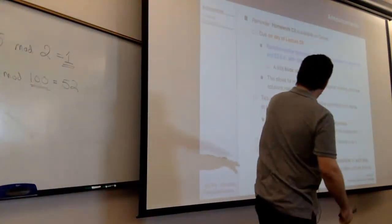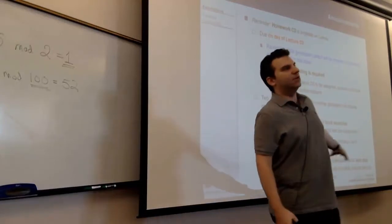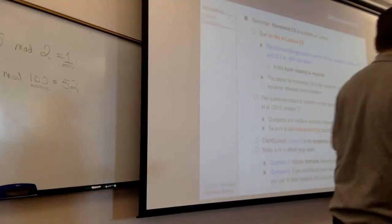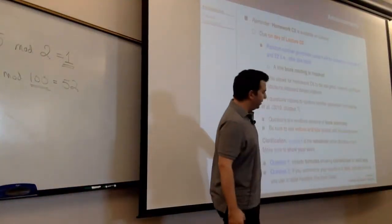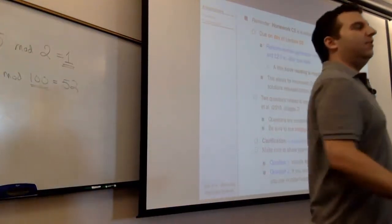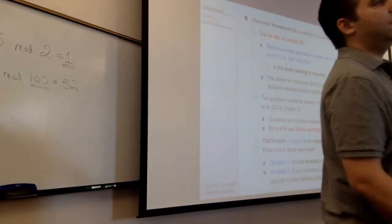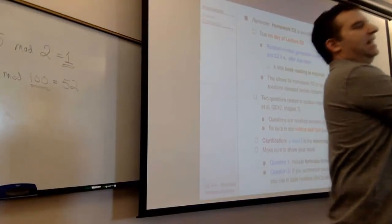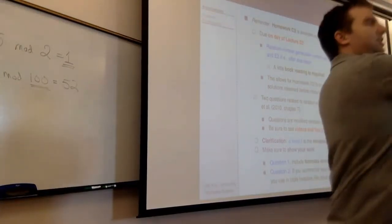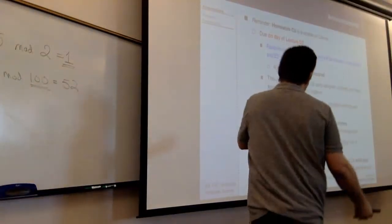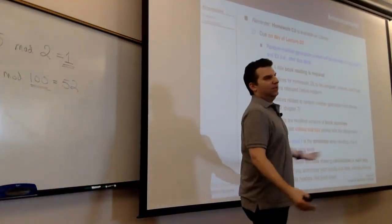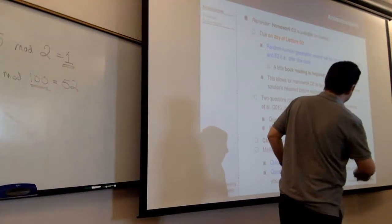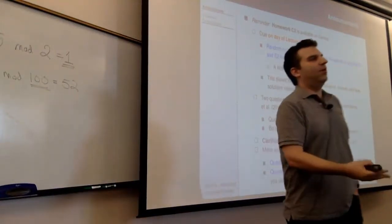Make sure to show your work on the homework. Question one is very much plug and chug, but we want to make sure you're plugging into the right formula. Question two — it's going to be easy to use a table, which is kind of how the book solves the problem. You can put your formulas in the rows of the table over on the side, then just populate the table with numbers. I don't need to see you plug in over and over again. Follow the book's example — if you do it like the book does, that'll be what we expect in the solution.